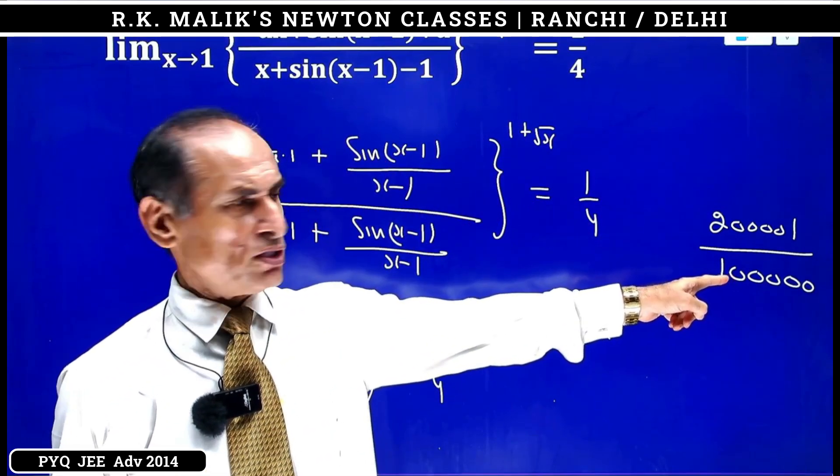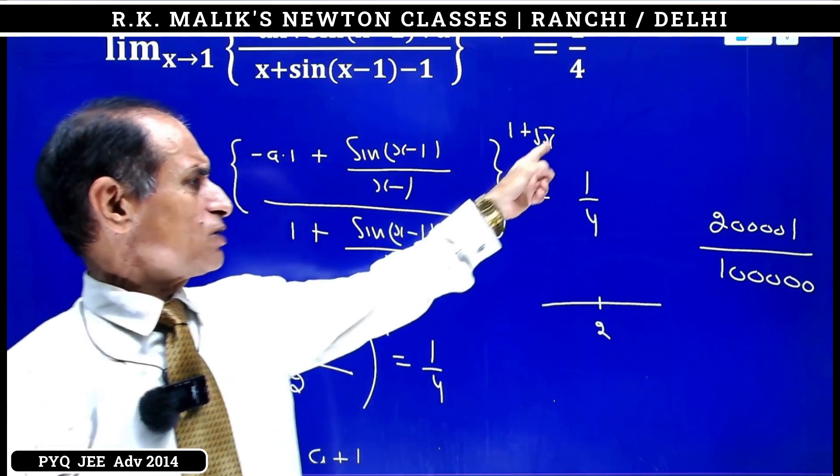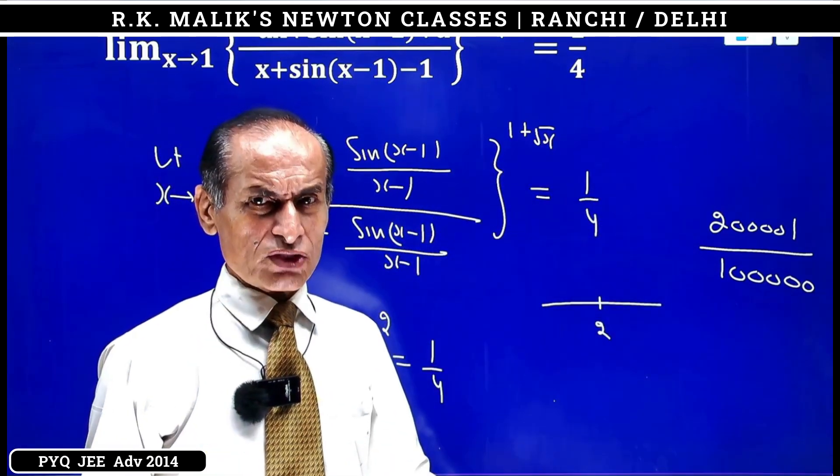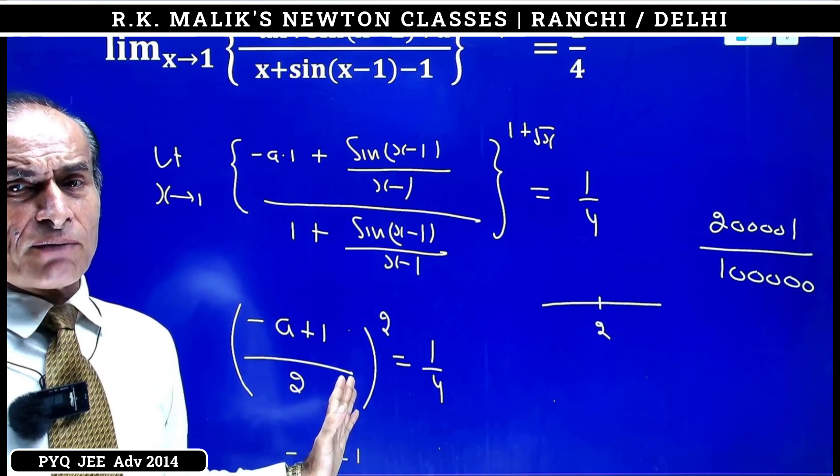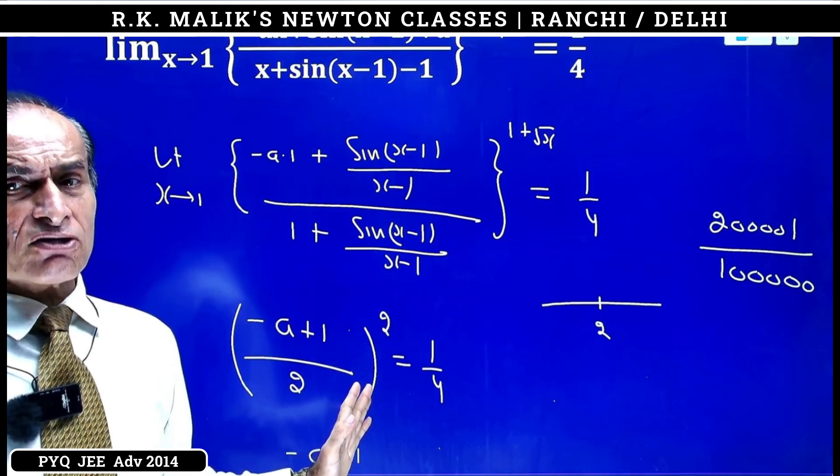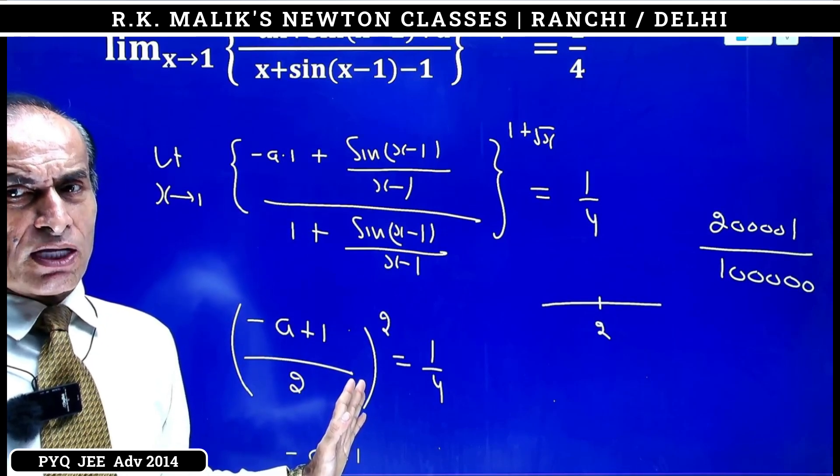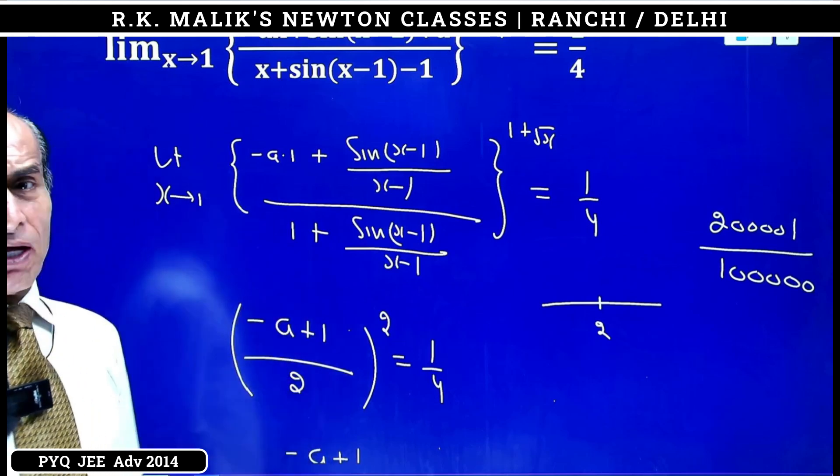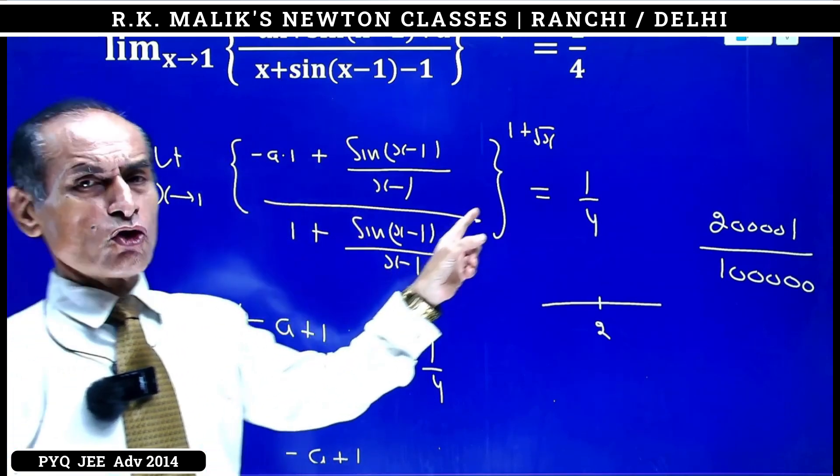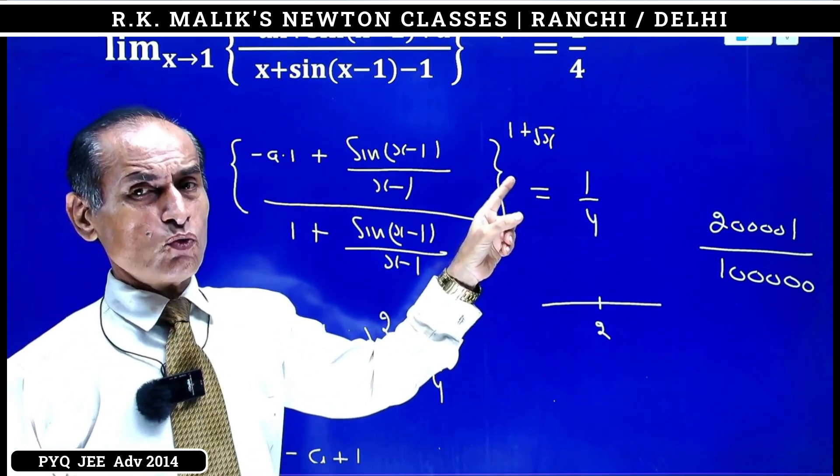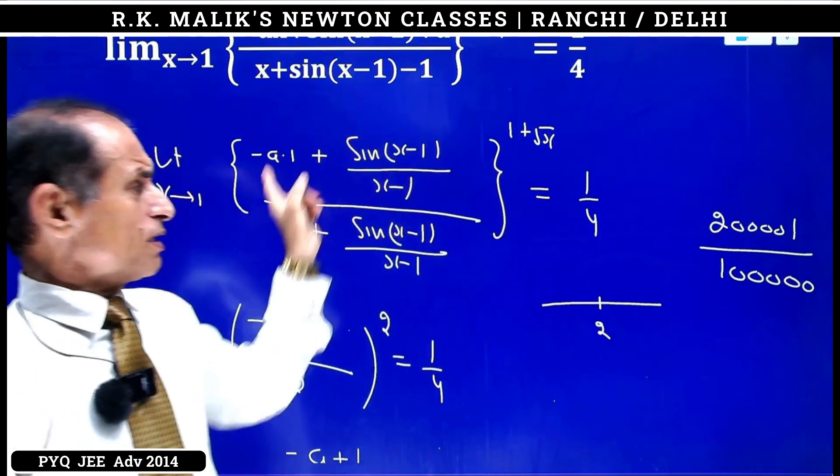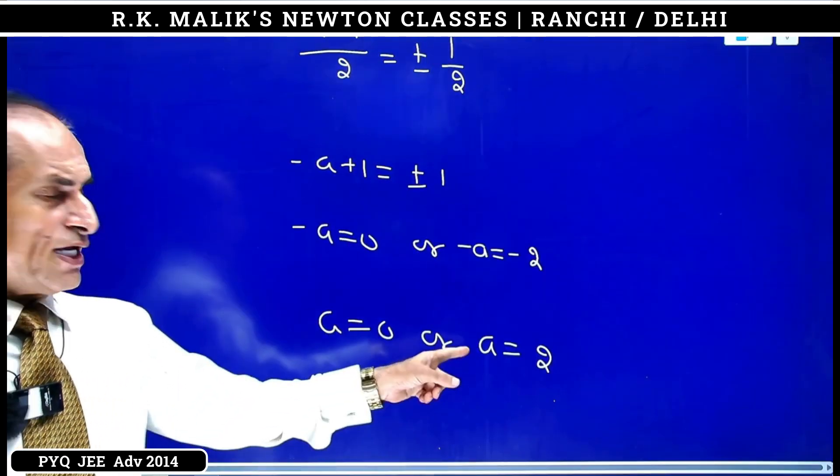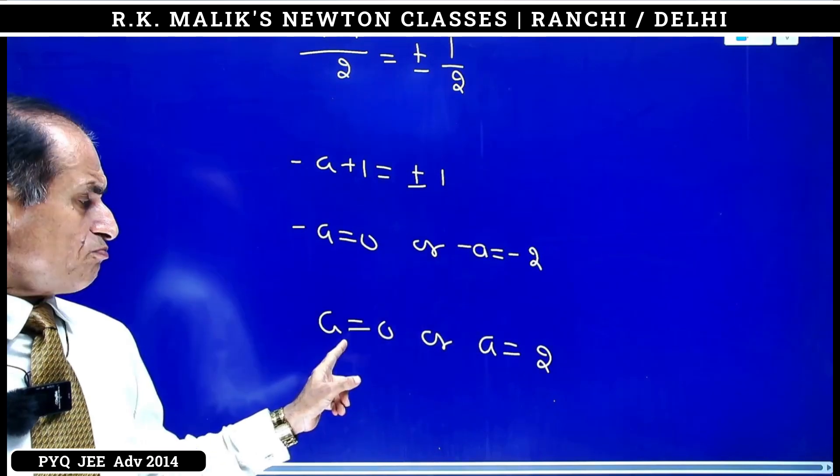When x takes such a value that this power becomes such a fraction, then in that case it will be undefined. When a negative number is raised to a power with odd numerator and even denominator, the answer becomes complex. This means that as x approaches 1, it is not necessarily tending to 1 by 4; at many values of x it will be undefined. Therefore a equal to 2 will be rejected.